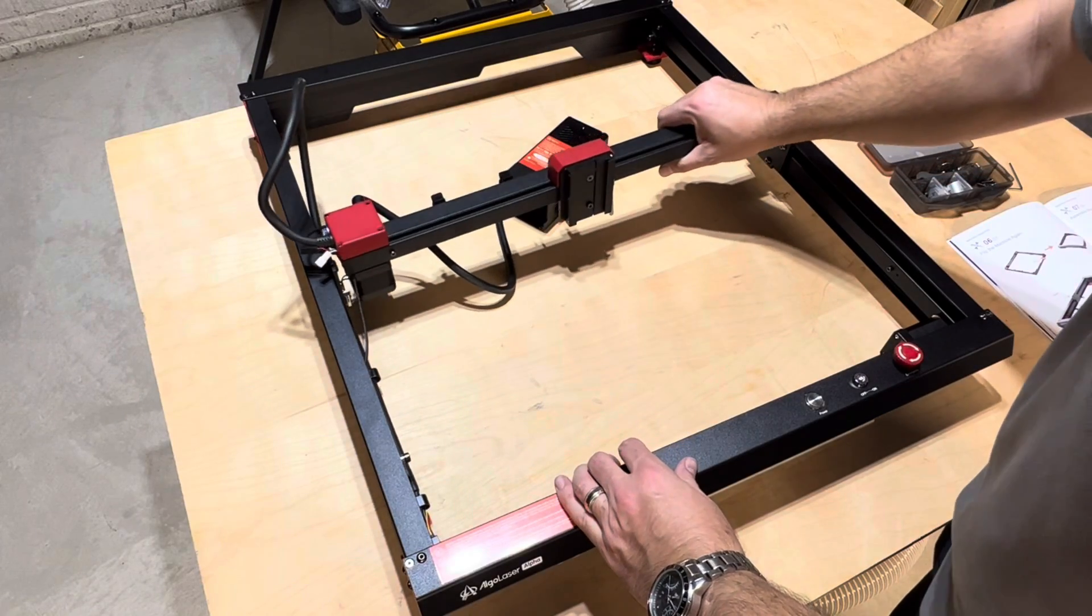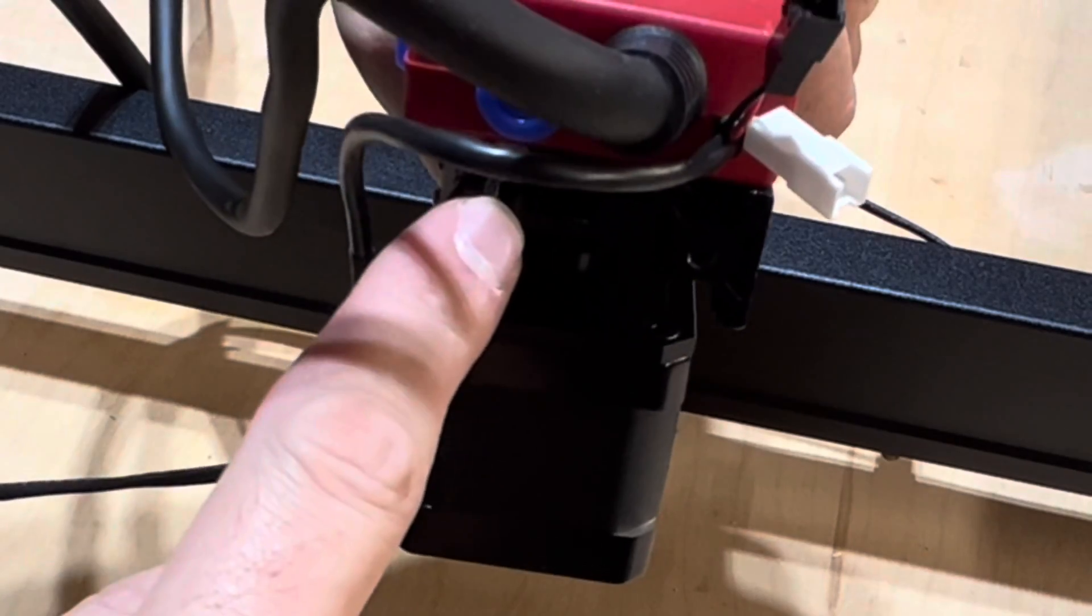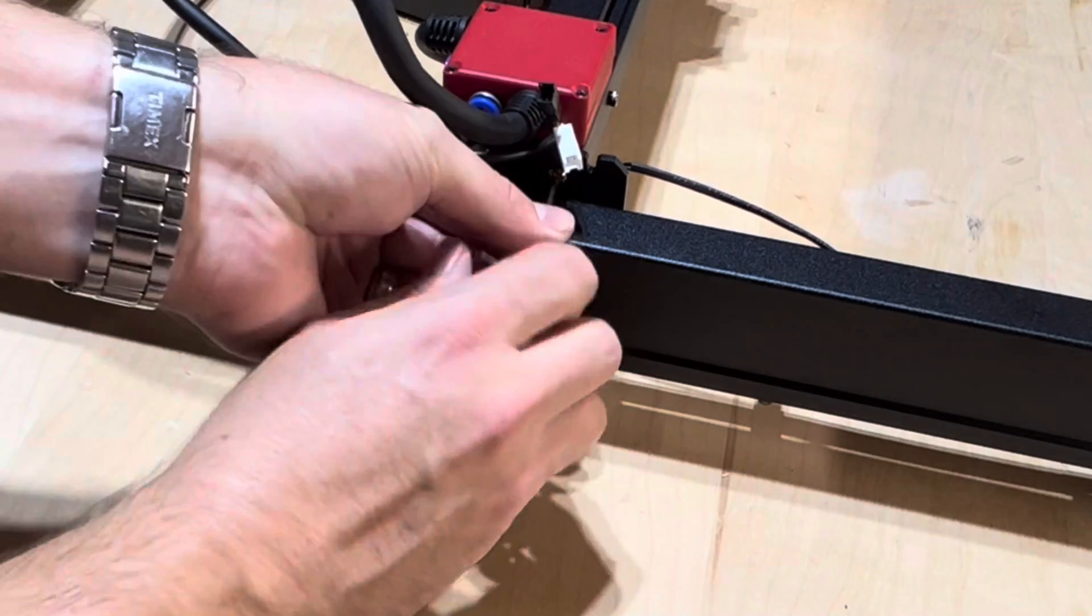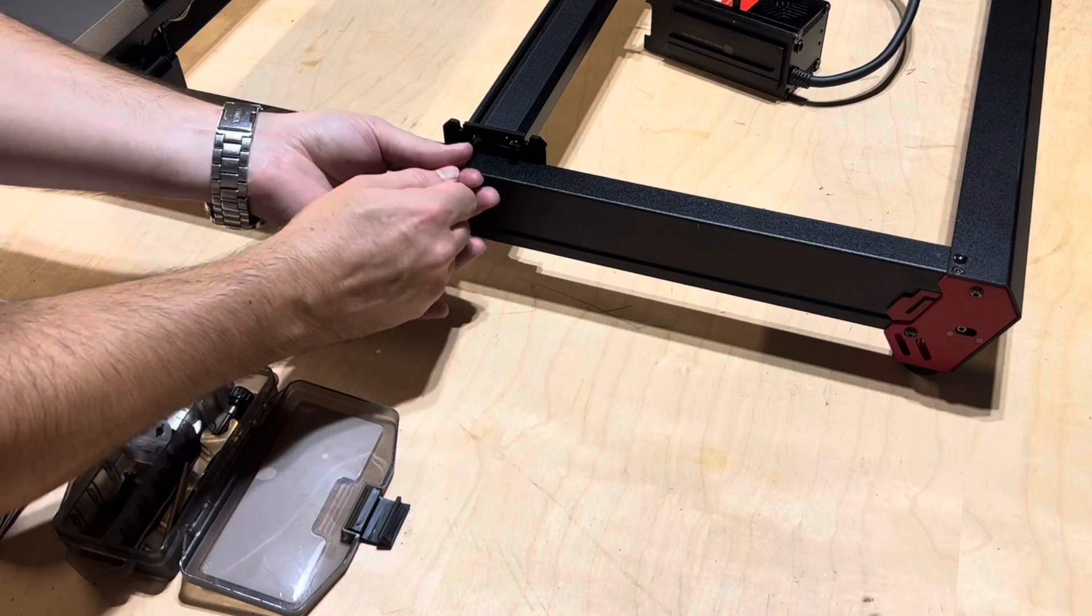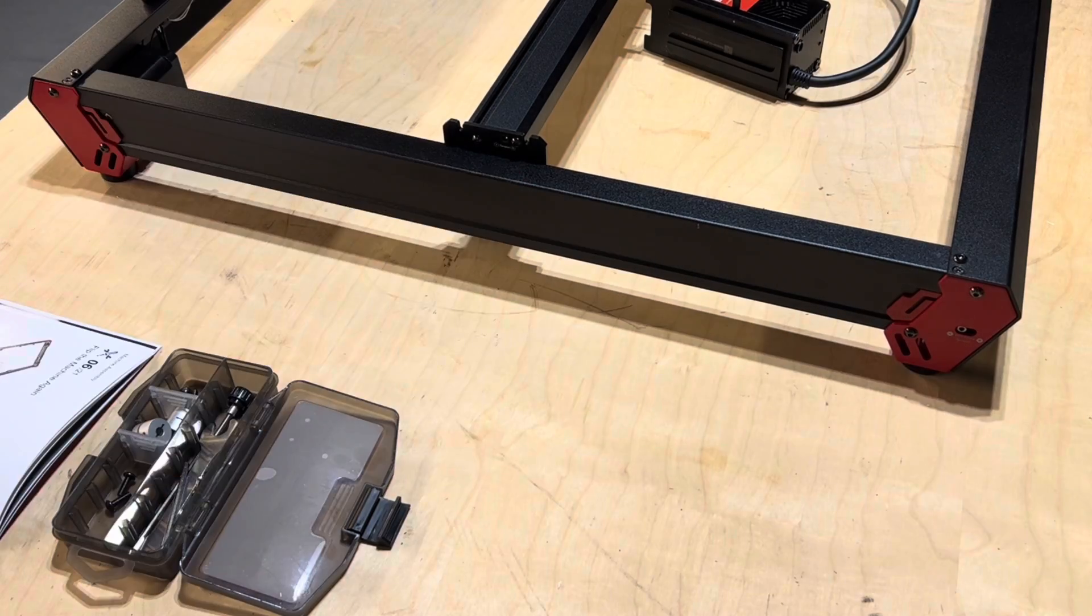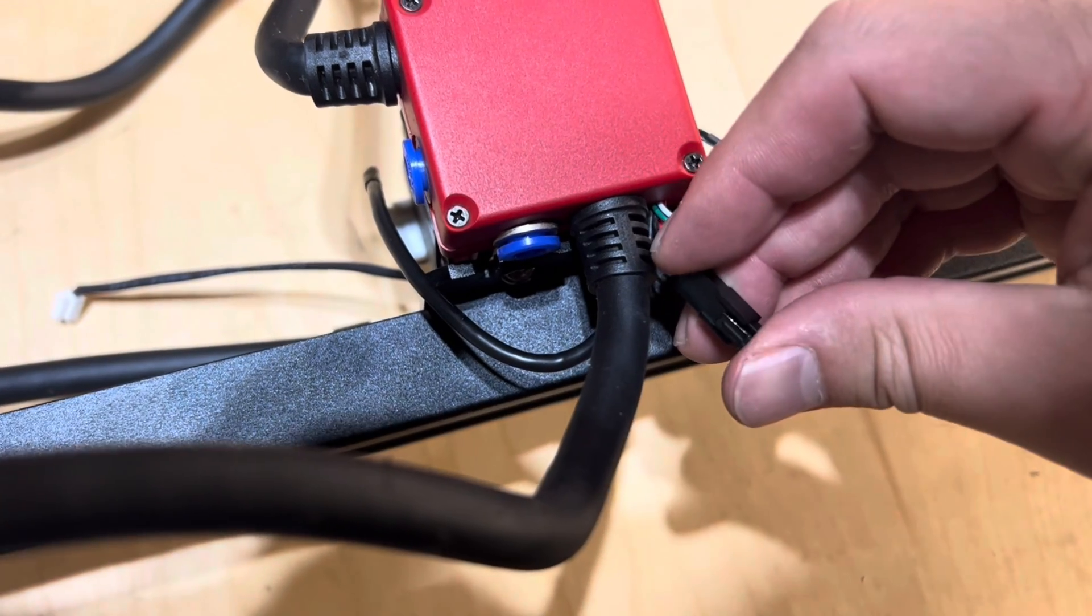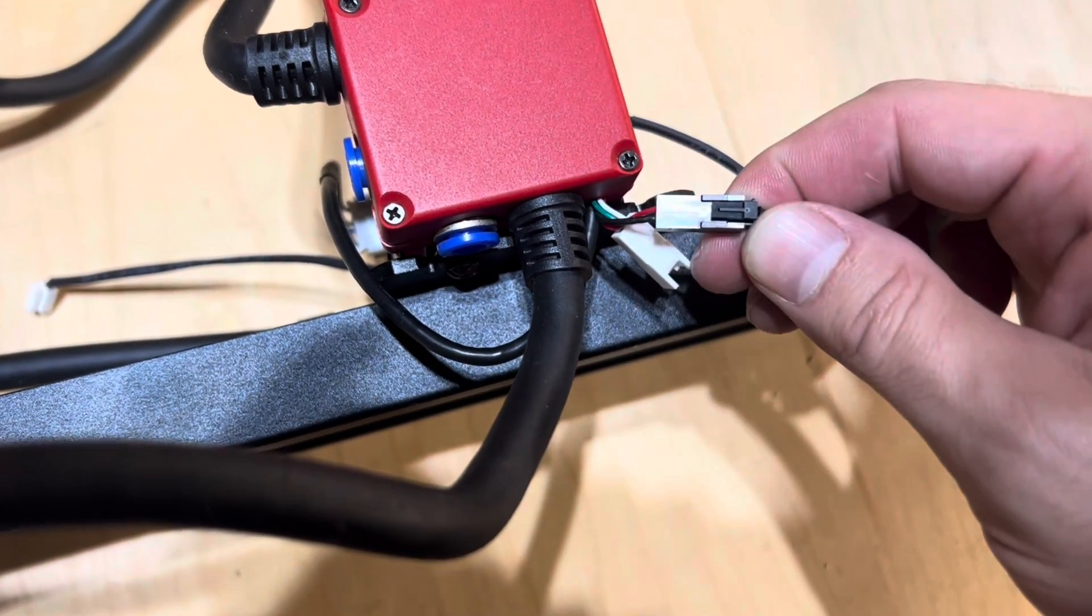Step three is to assemble the x-axis assembly. E with the end of the cable box should face B. Screw it down with two screws on each end. Step four is to connect the limit switch. Insert the y-axis limit switch terminal into the adapter of the cable box.